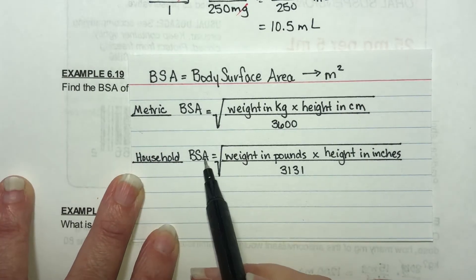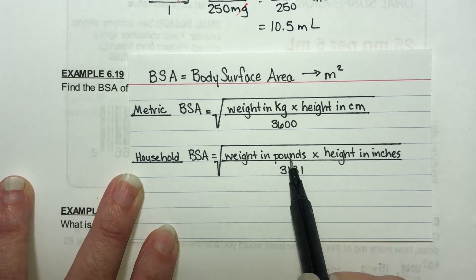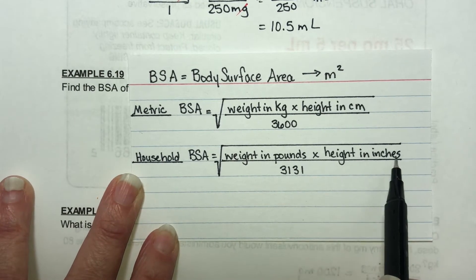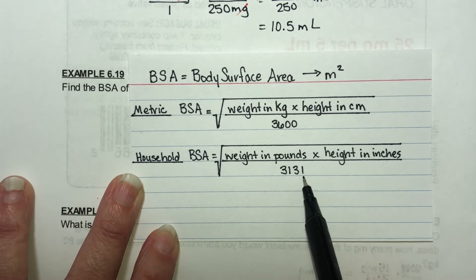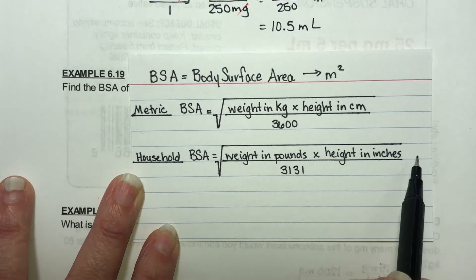If it's household units, it's the weight in pounds times the height in inches, divided by 3,131, and then you take the square root of that.